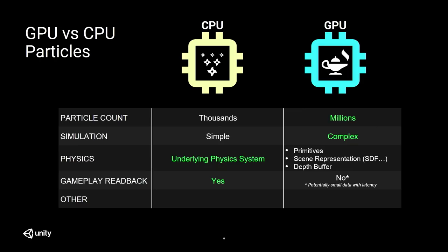On GPU, you have access to all the data that is in video memory, like frame buffers, so you can achieve cool screen space effects that you cannot do with CPU particles. Both GPU and CPU have their pros and cons — they need to cohabit together, and you have to choose based on what you want to do.